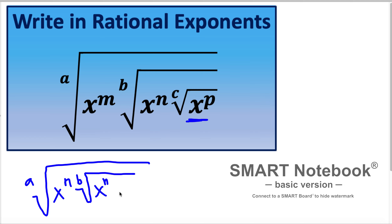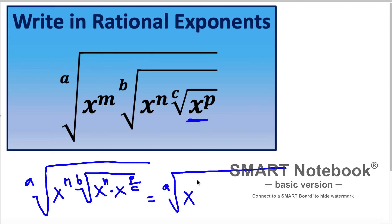Writing as rational exponents, we can write this as x to the p divided by c. Now this we can rewrite — here is x in exponent m, so this is m, and here this one is b. Because we have the multiplication of exponents here with the same base, we can write to the same base x, which happens to be n plus p divided by c.